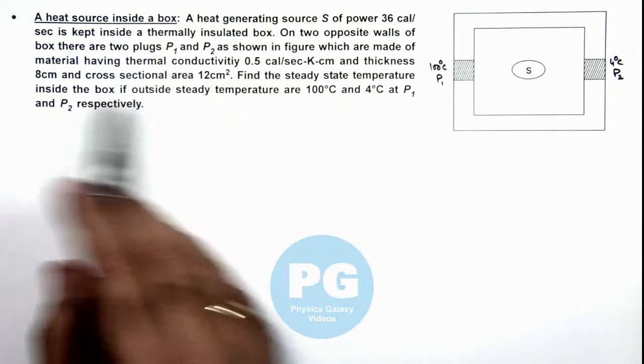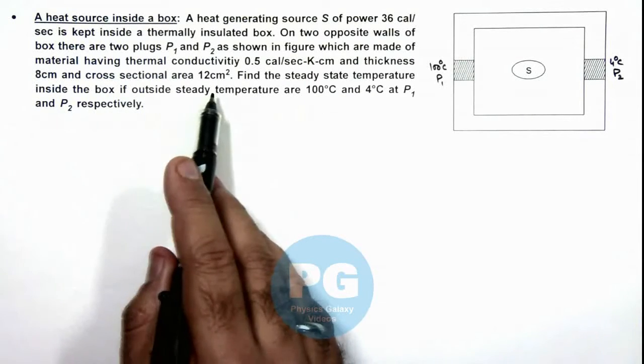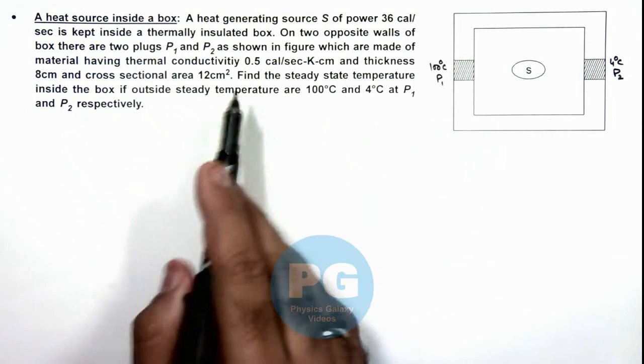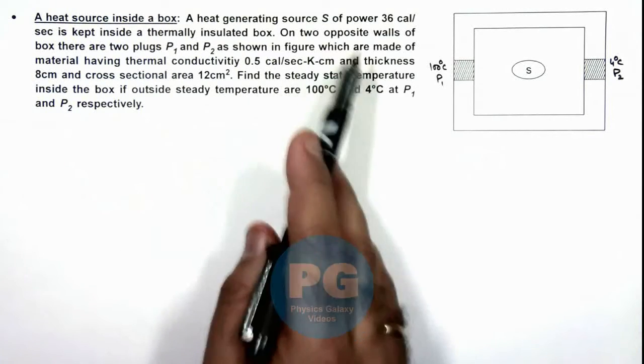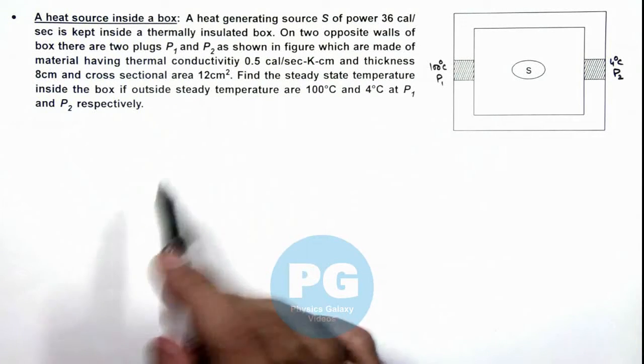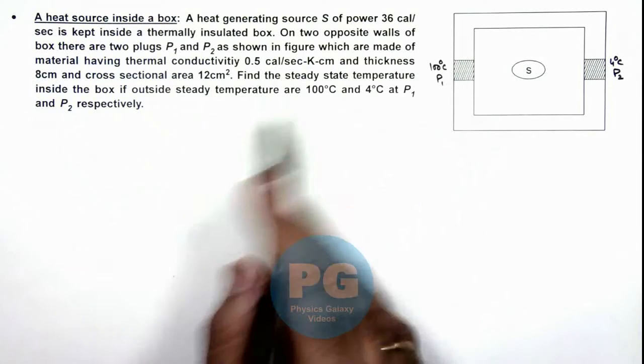And thickness 8 centimeter with a cross sectional area 12 centimeter square. Here we can also observe that all the units given are in CGS so we can directly analyze it without transforming units.